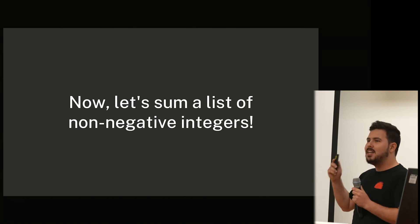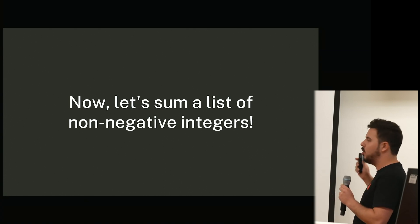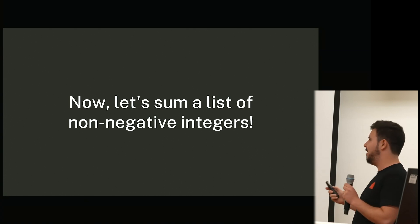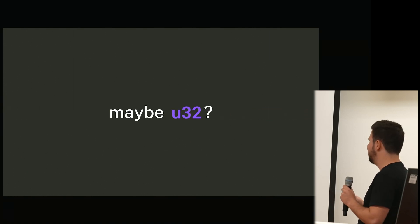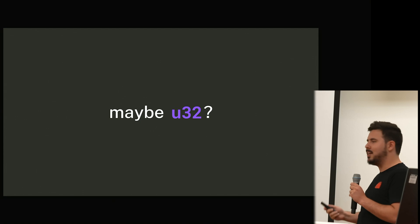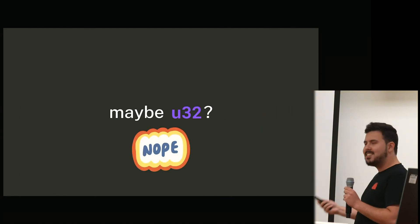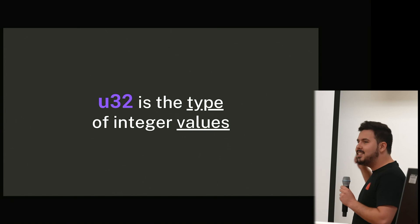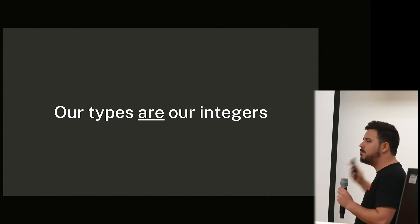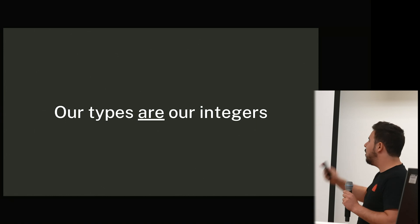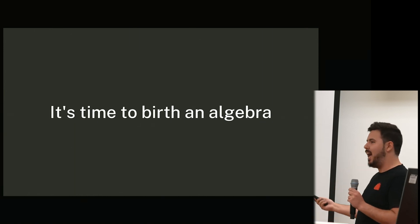Now we're going to do the big project of this lightning talk — summing a list of non-negative integers. Wait, what's an integer? Maybe something like U32, non-negative integers. No — U32 is the type of integer values. We don't have values; our types are our integers.